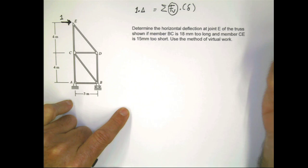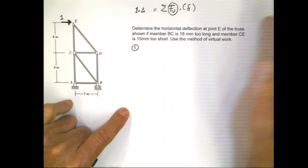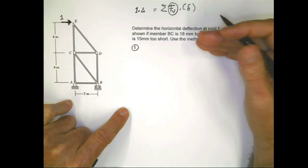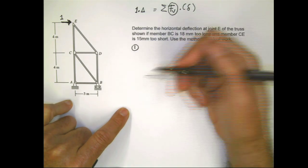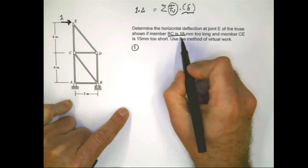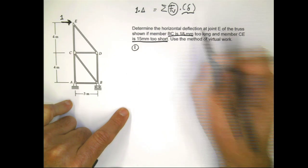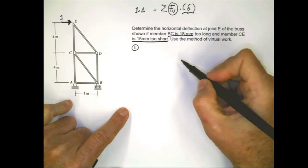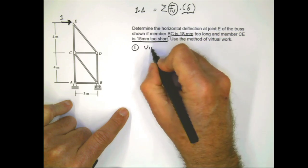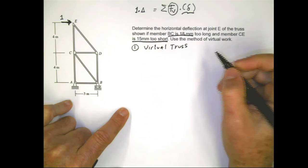How do you approach this problem? When we calculate deformation due to loads, the first step is statics on the real structure. But in this case, we don't have to do that because we already know the deformations — BC is 18 millimeters too long and CE is 15 millimeters too short. So the first step here will be statics on the virtual structure.